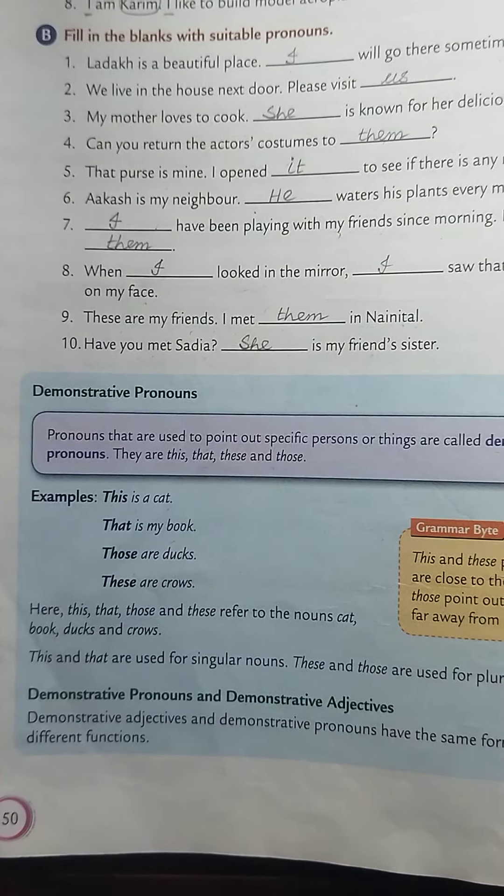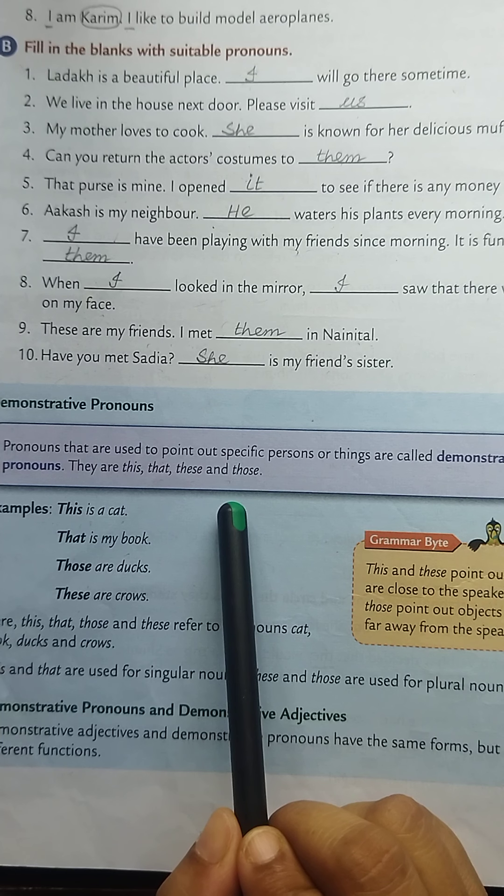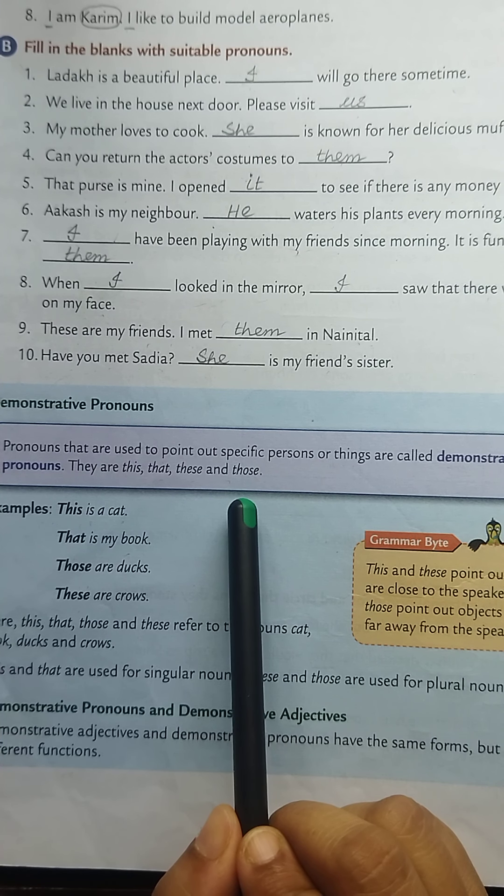Next, demonstrative pronouns. Pronouns that are used to point out specific persons or things are called demonstrative pronouns. They are this, that, these, and those. So the pronouns which we use to point out specific persons or things are called demonstrative pronouns.